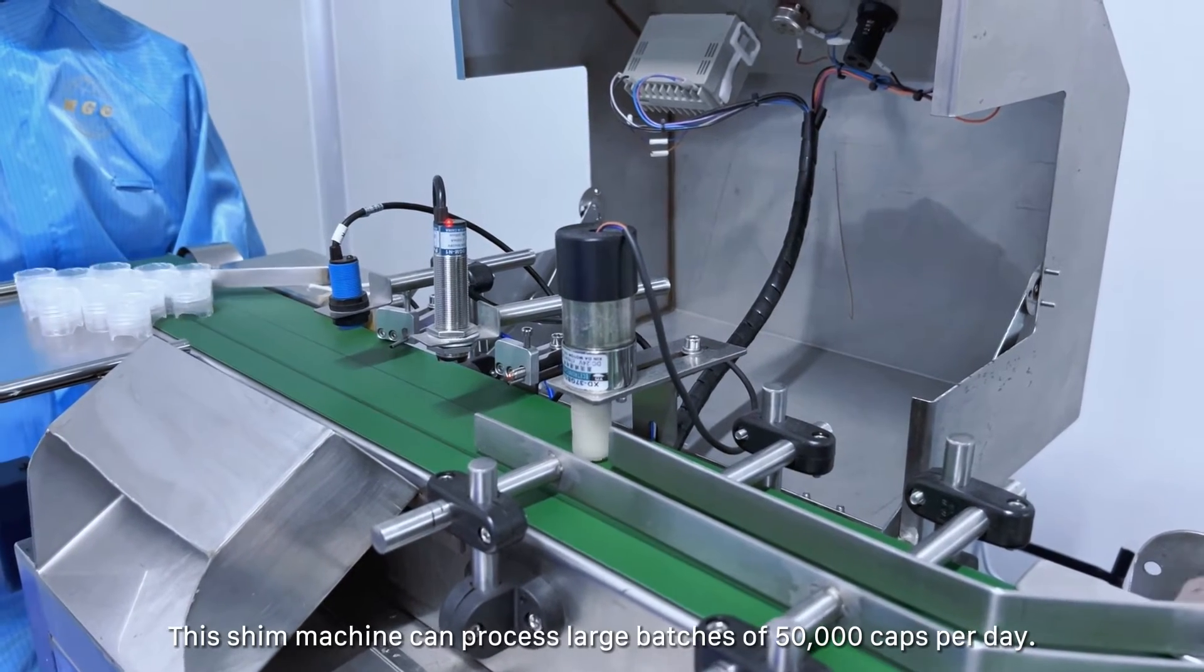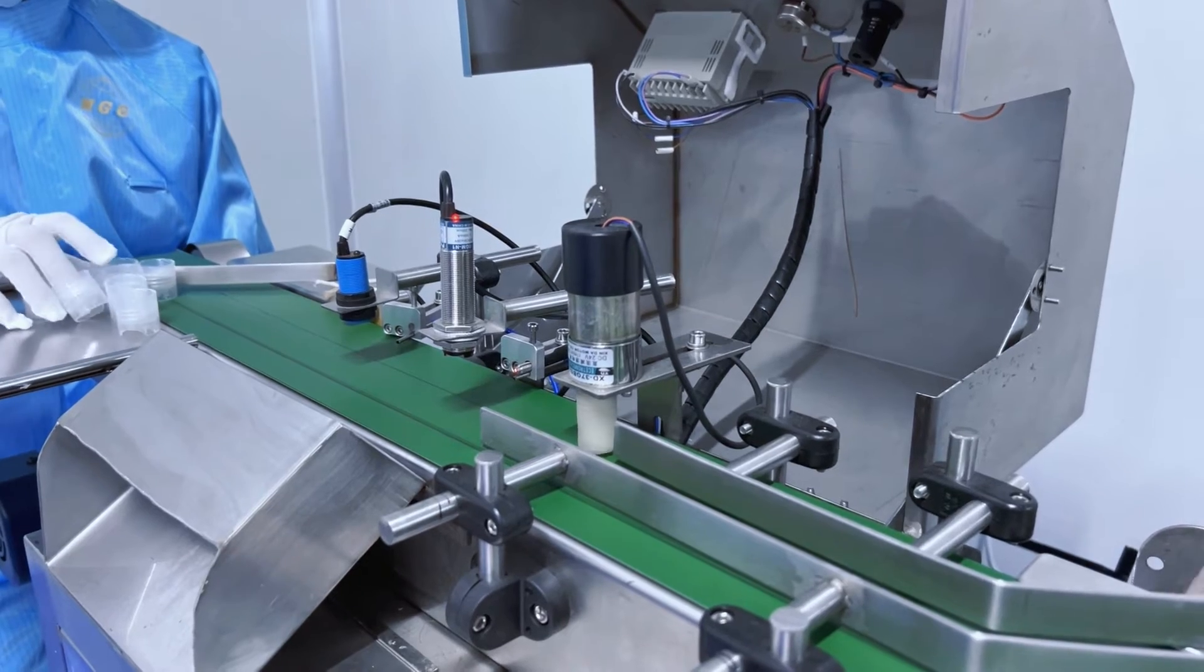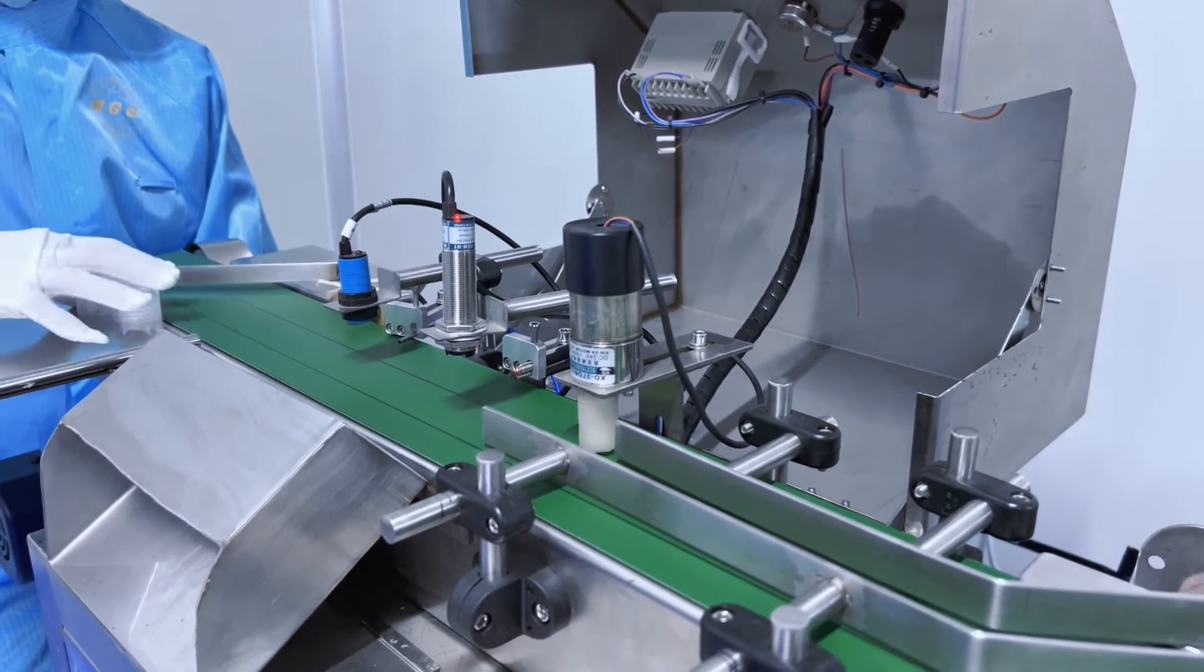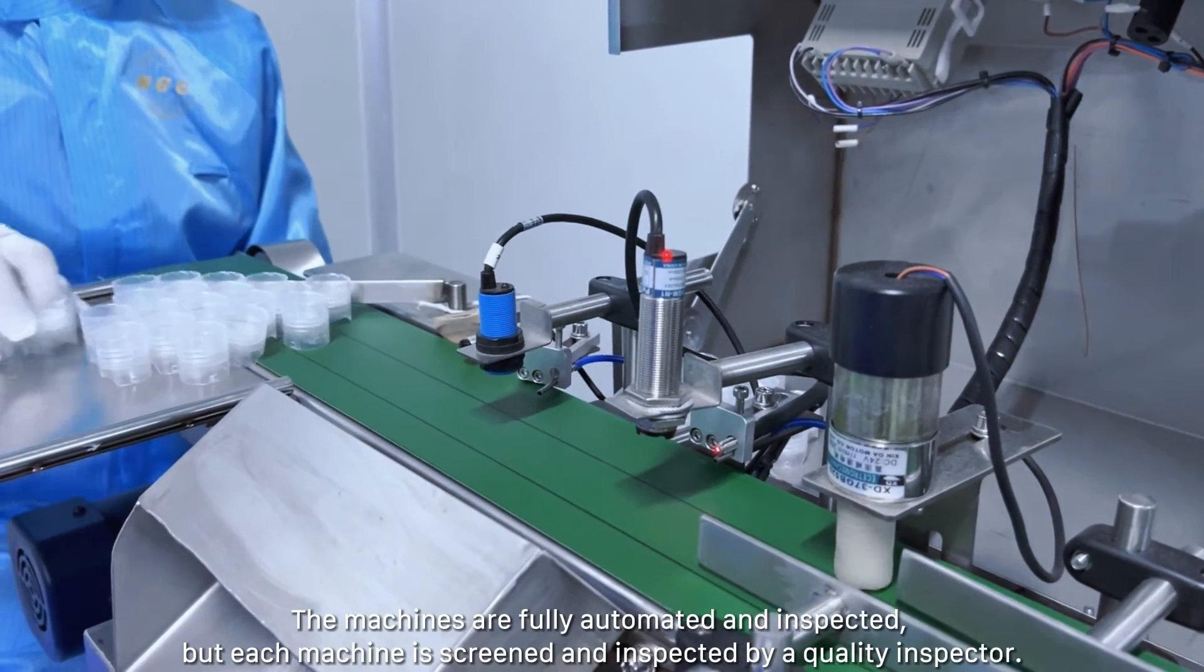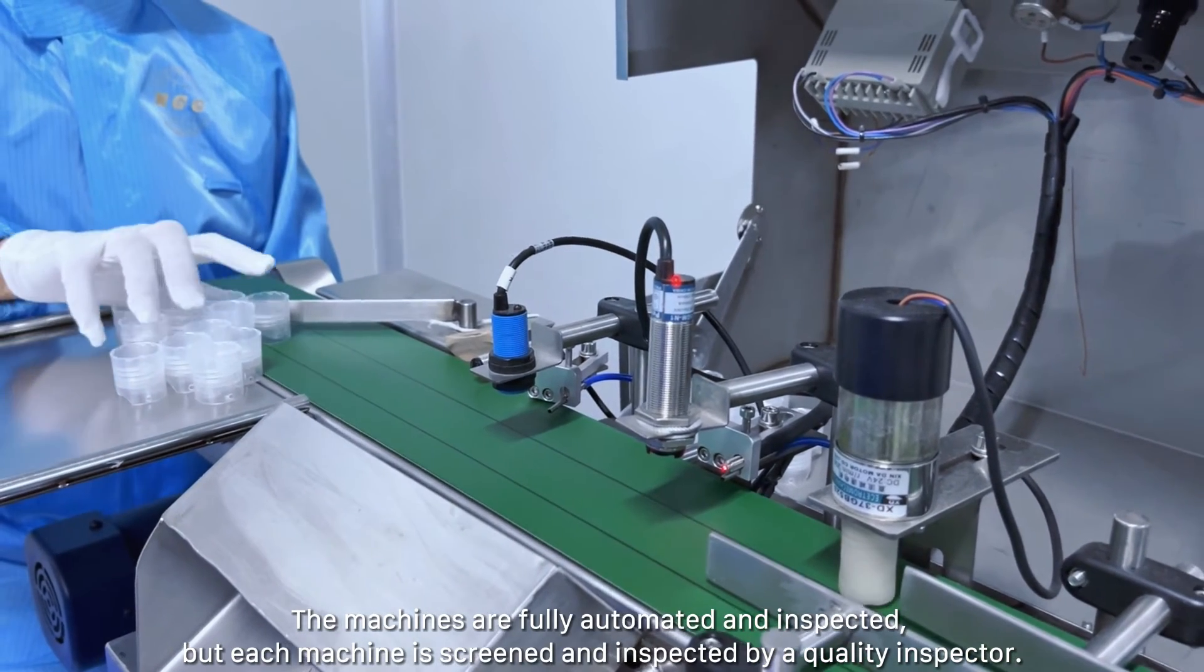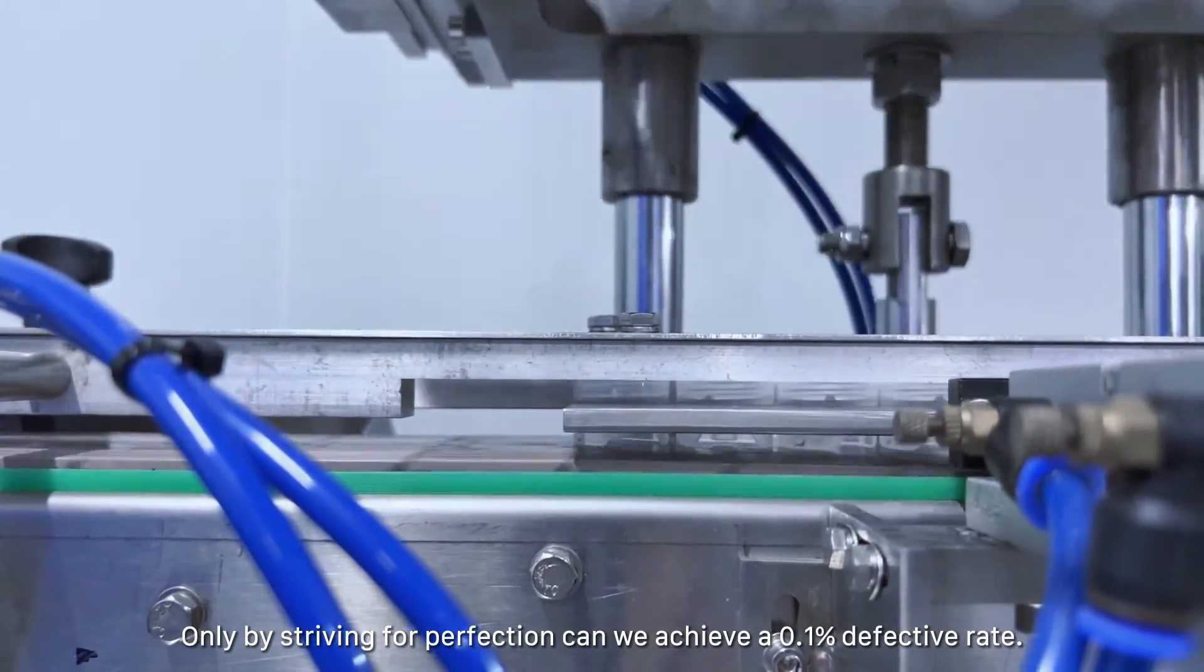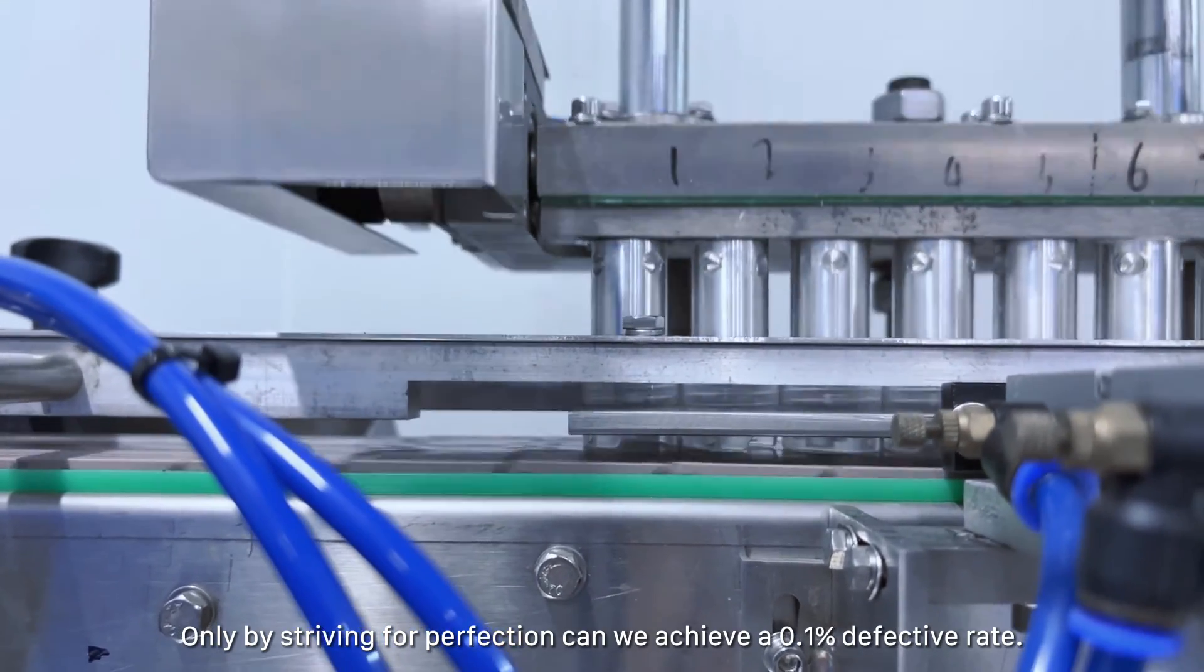This gasket machine can process large batches of 50,000 caps per day. The machines are fully automated and inspected, but each batch is screened and inspected by a quality inspector. Only by striving for perfection can we achieve a 0.1% defect rate.